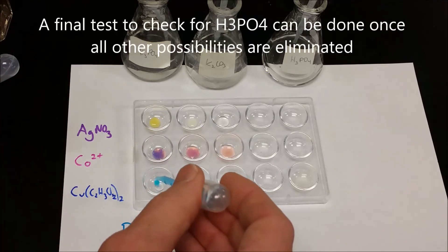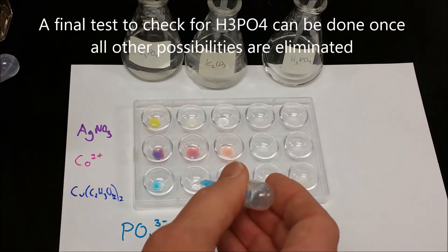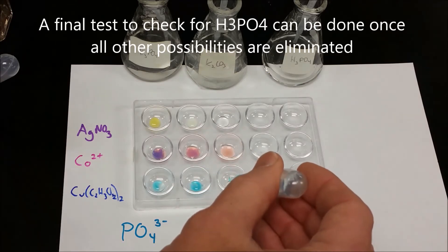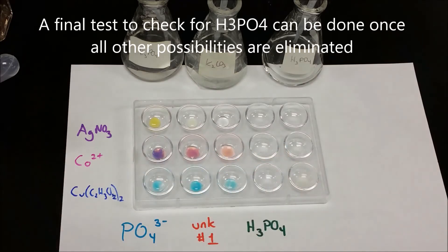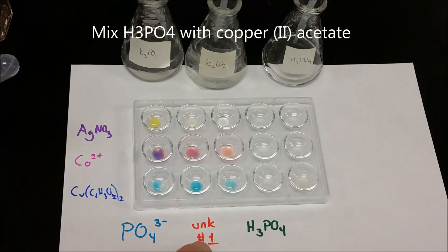At this point, you should only be checking between phosphoric acid and water because it's going to give you the same result whether you do a phosphate, an unknown, or phosphoric acid. But phosphoric acid will form a precipitate while water won't.